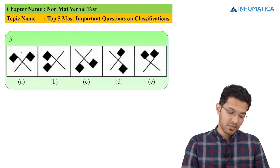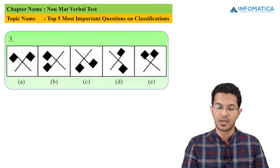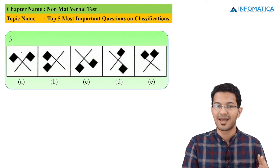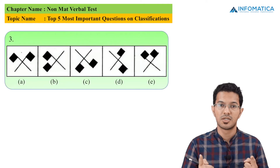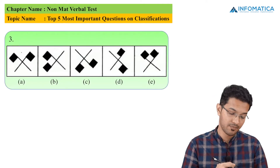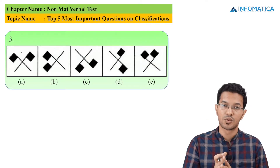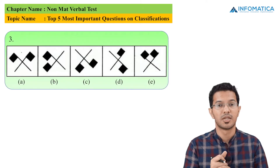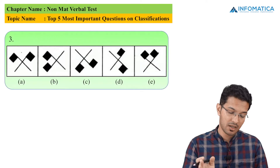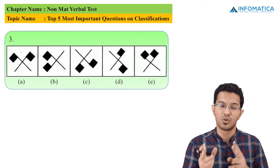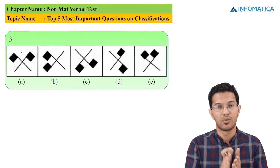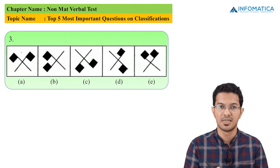Unlike other figures. If I talk about option A, the two flag patterns are on opposite sides of the division. If I talk about option B, option D, and option E, the two flags are on the same side of the division. So the answer to this question will be option C.